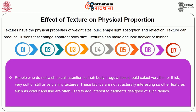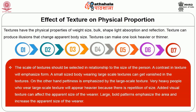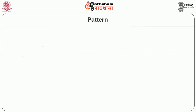People who do not wish to call attention to their body irregularities should select very thin or thick, very soft or stiff, or very shiny texture. These fabrics are not structurally interesting so other features such as colour and line are often used to add interest to garments designed of such fabrics. The scale of textures should be selected in relationship to the size of the person. A contrast in texture will emphasise form. A small sized body wearing large scale textures can get vanished. Pettiness is emphasised by large scale texture. Very heavy people who wear large scale texture will appear heavier because there is repetition of size. Added visual texture can also affect the apparent size of the wearer. Large bold prints emphasise the area and increase the apparent size of the wearer.